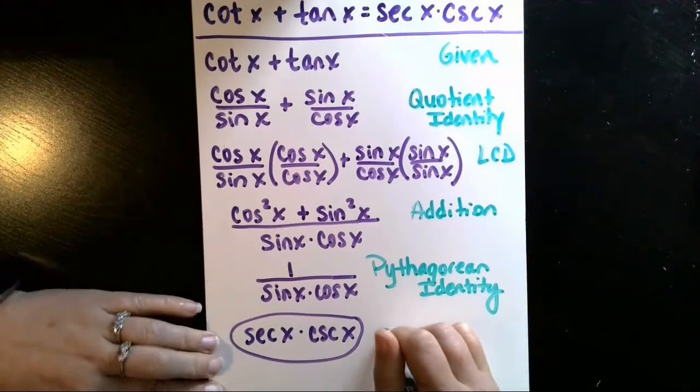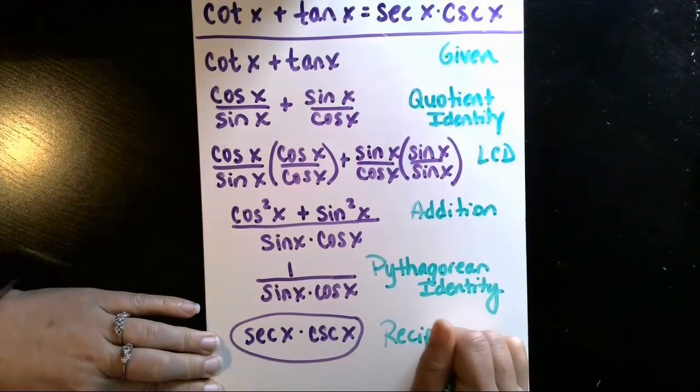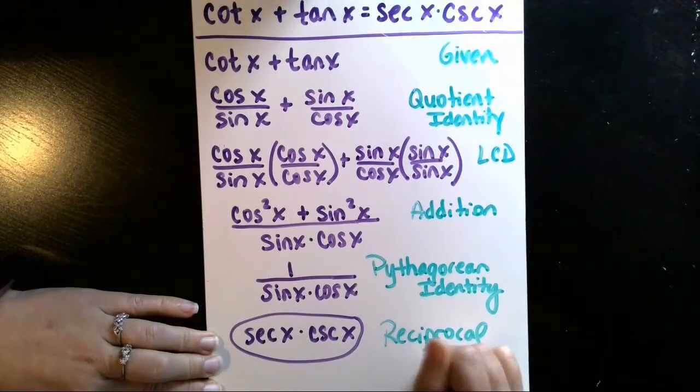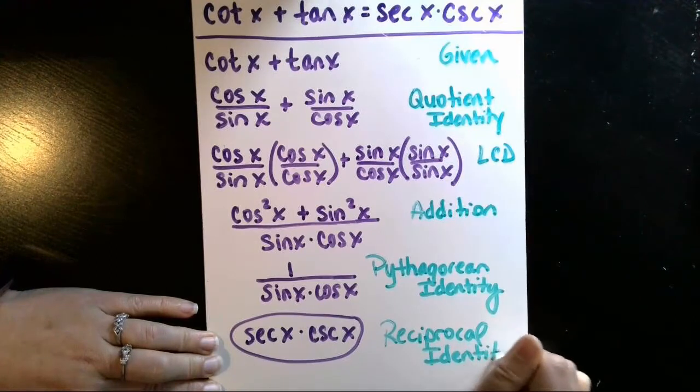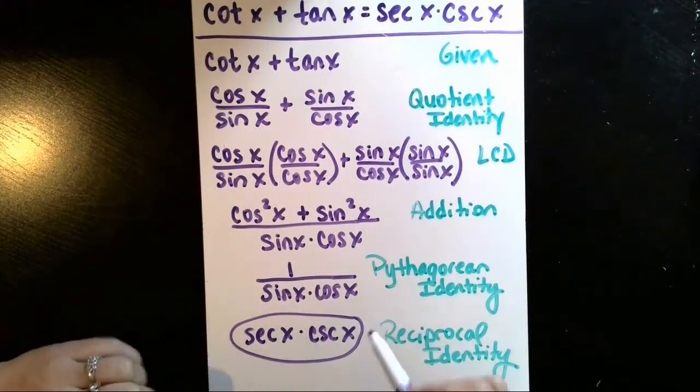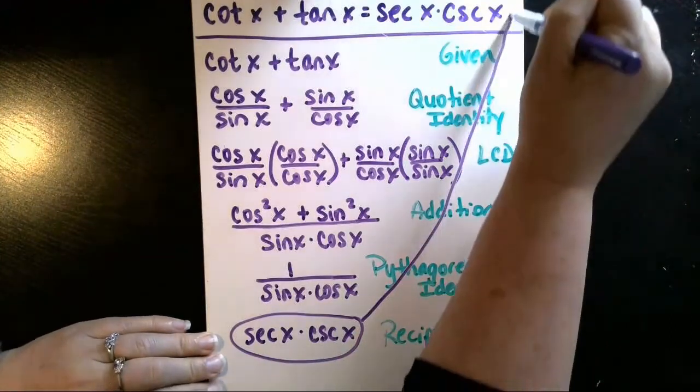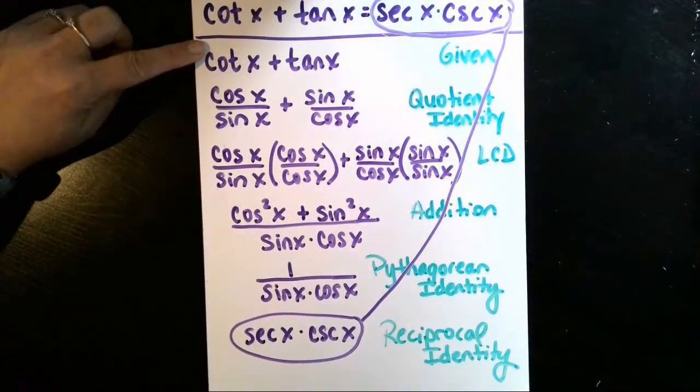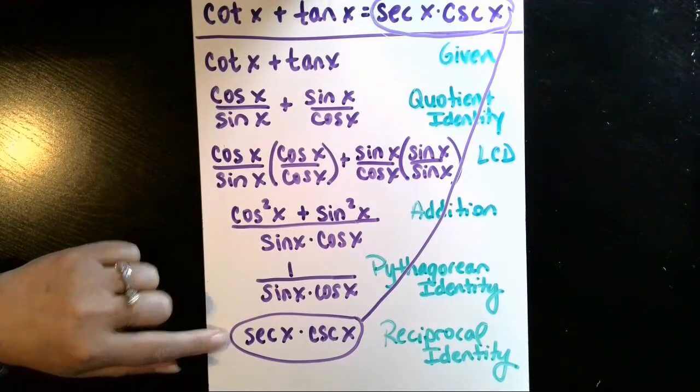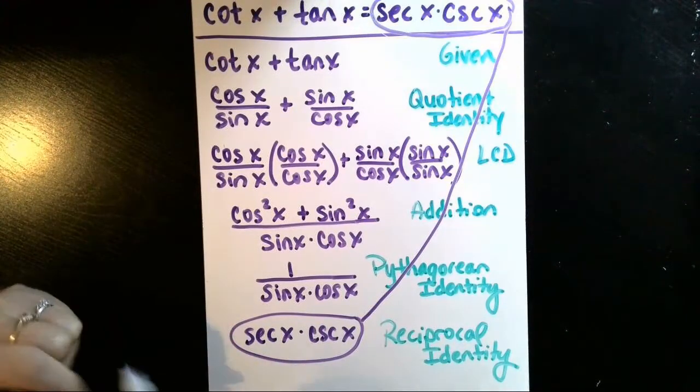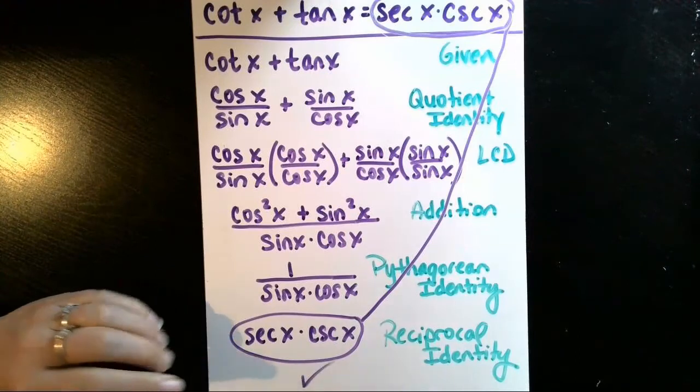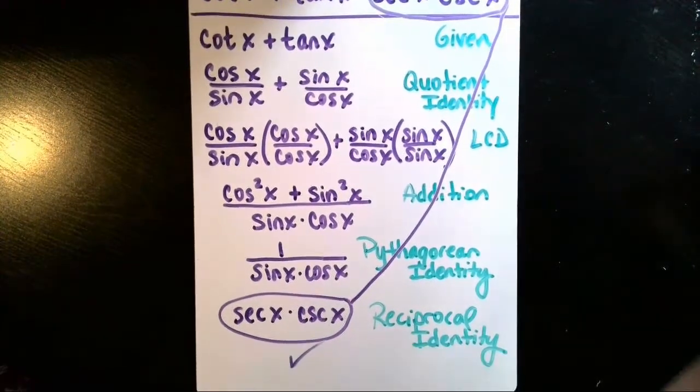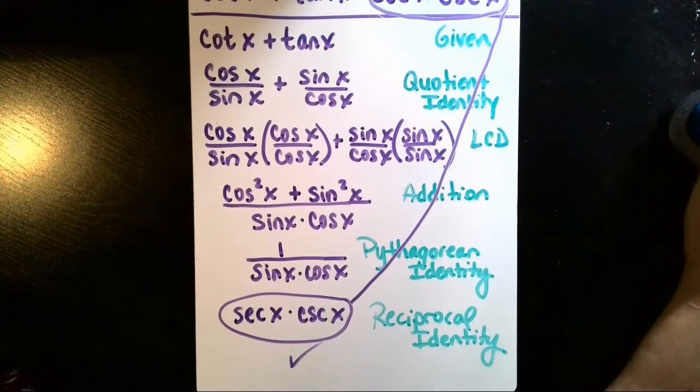So that was using reciprocal identities. Now I've shown that what I started with, cotangent of x plus tangent of x, does equal secant of x times cosecant of x, and this identity has been verified. Hope that helps, and feel free to message me if you have any questions.